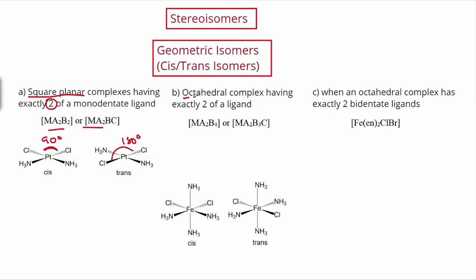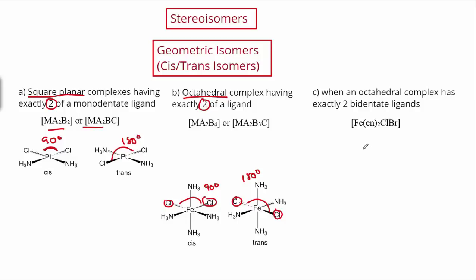The second example deals with octahedral complexes. In an octahedral complex, all bond angles between adjacent species are 90 degrees, but two opposing species are 180 degrees apart. Focusing on two chlorines in an octahedral complex having exactly two of a monodentate ligand: in one arrangement the two chlorines are 90 degrees apart (cis), and in the other they are 180 degrees apart (trans), again giving rise to cis and trans isomers.